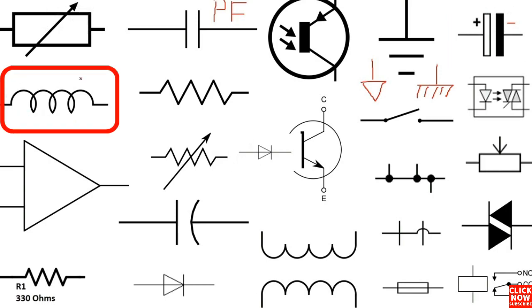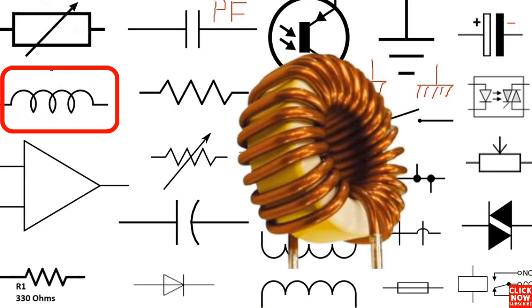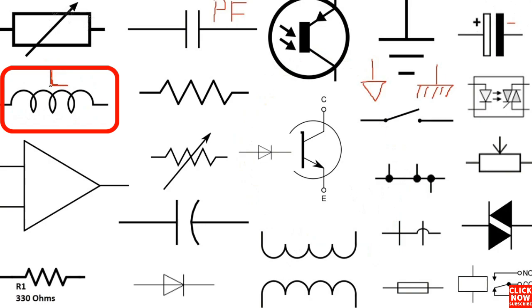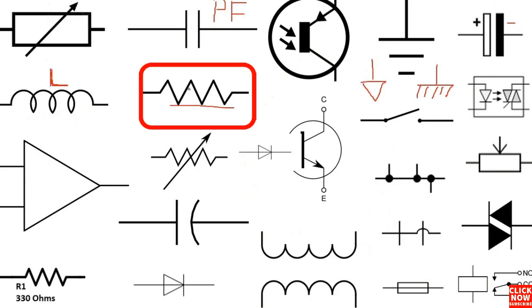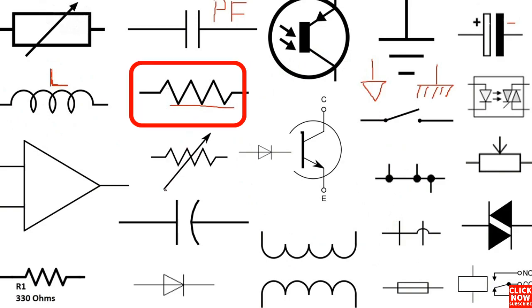Here we have the inductor or coil. Its reference on a motherboard is always L or PL. Here we have a normal resistor — this is the universal resistor symbol.